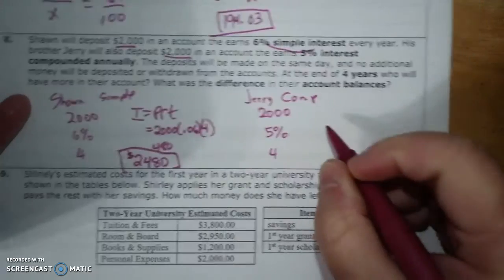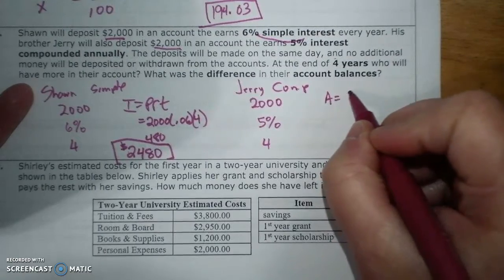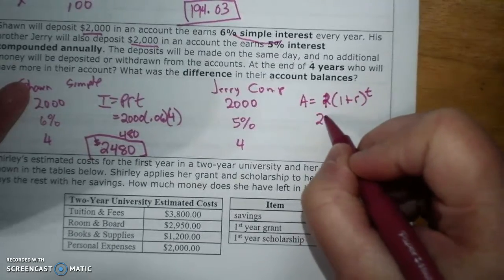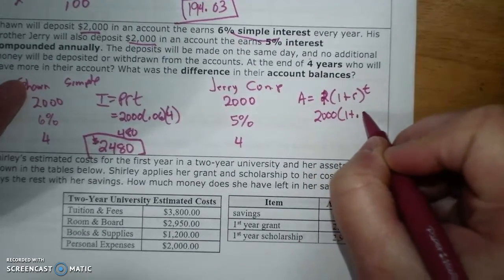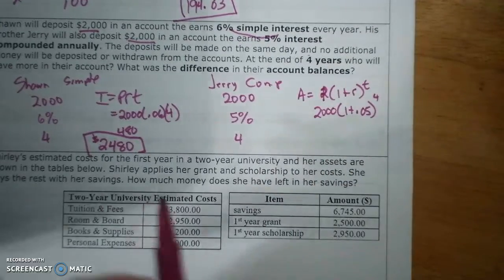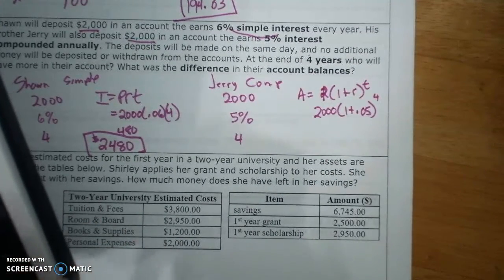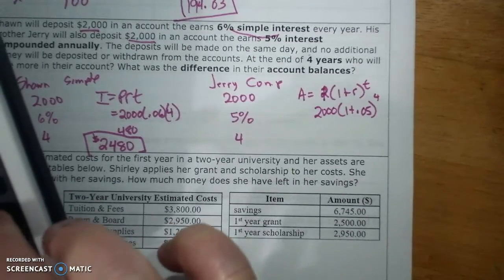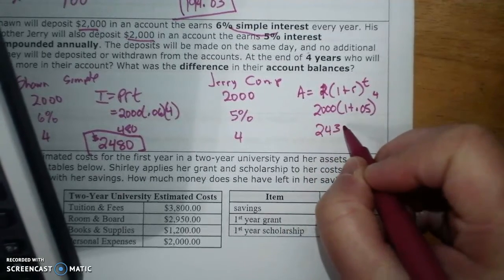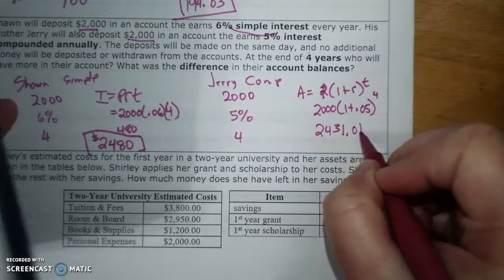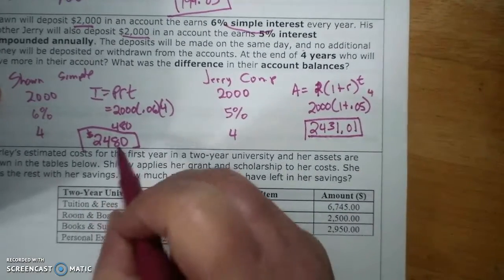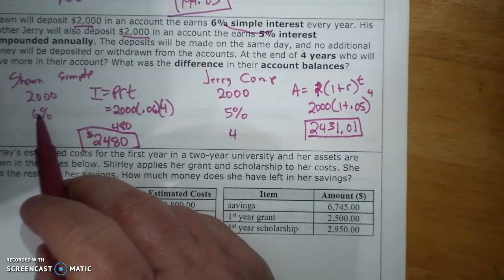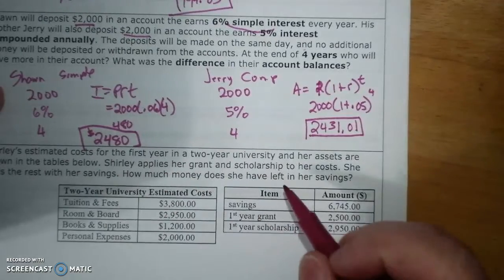Okay, Jerry's is A equals P times (1 plus r) to the t, which is $2,000 times (1 plus 0.05) to the 4, and that is $2,431.01. And so Sean got more.